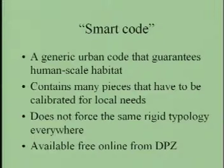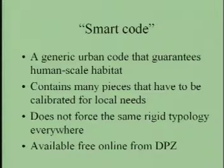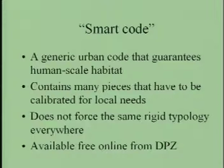The Smart Code is what DPZ call their urban code. It is a generic urban code that guarantees the human-scale habitat and contains many pieces that must be calibrated for local needs. Therefore, calibration ensures you do not force the same rigid typology everywhere. The Smart Code is available free online from DPZ, or anyone in the world can order a printed copy. It includes sufficient instructions so that everyone can try to calibrate the code to their local condition.